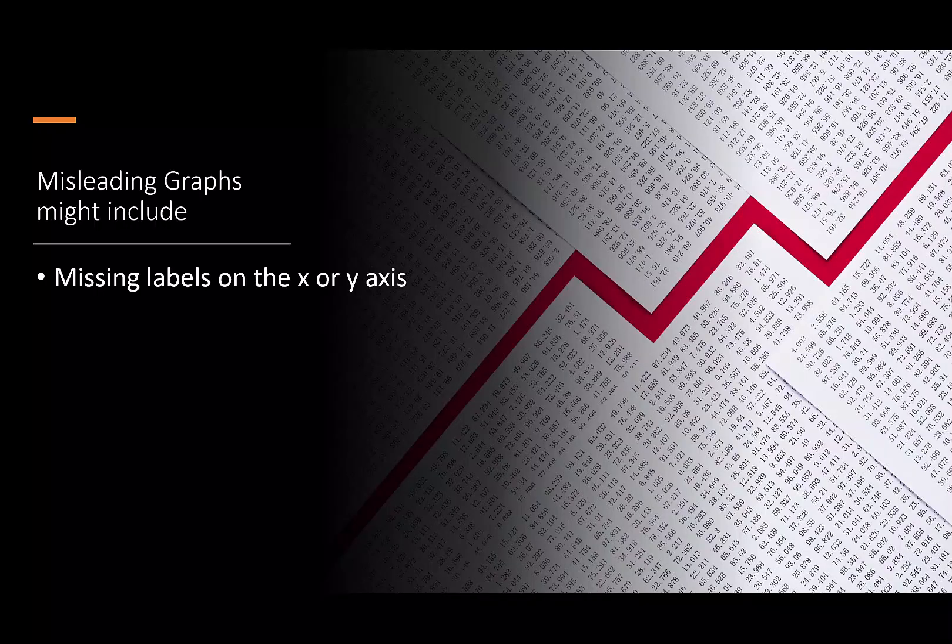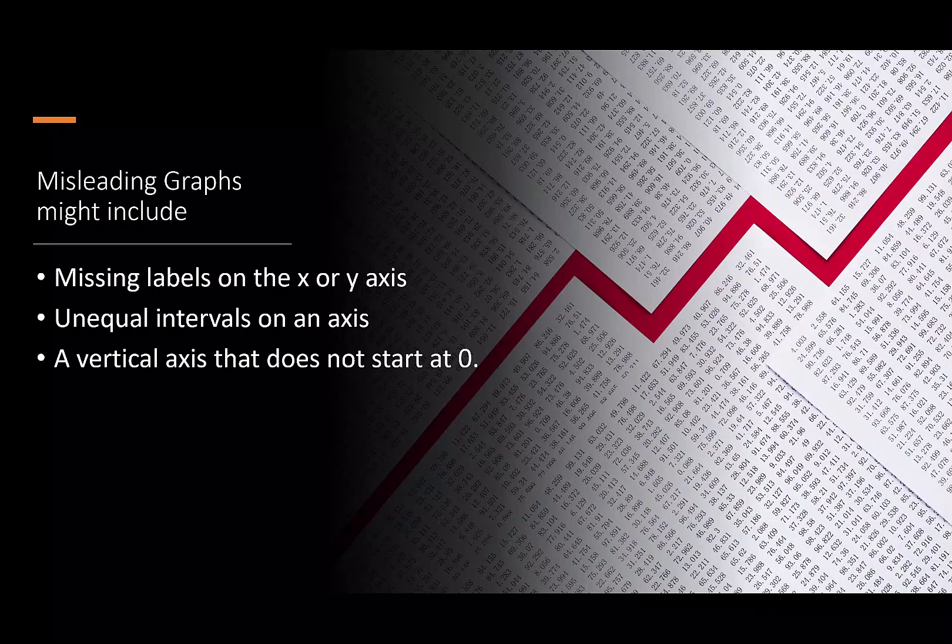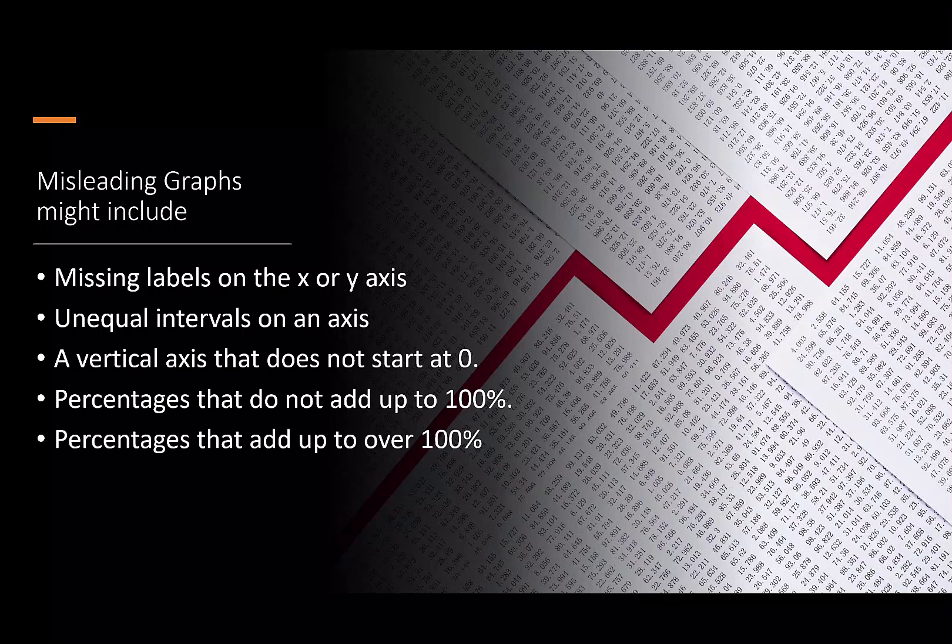Misleading graphs might include missing labels on the X or Y axis, unequal intervals on an axis, a vertical axis that starts at a number other than zero, percentages that don't add up to a hundred, or percentages that add up to over a hundred, and manipulated visual elements.